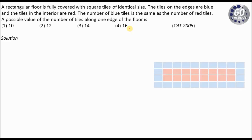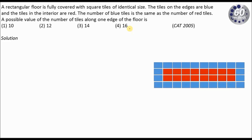The diagram is something like this. I have tiles of identical sizes where the tiles on the edges are blue and the tiles on the interior are red. We have to find what can be the possible number of tiles on one of the edges. I would request you to pause the video and try to solve the question on your own, and once you are done, please look ahead for the solution.